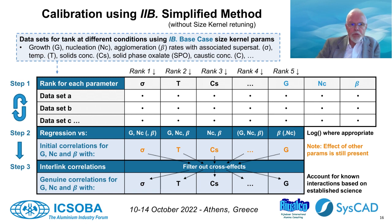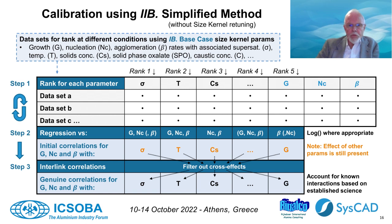The correlations that we obtain will be distorted to a certain extent, because the other process variables will not be constant over the ranked datasets. In order to eliminate this distortion, we interlink all the obtained correlations with all the ranked datasets. We do this for growth rate, nucleation rate and agglomeration rate separately. The process of autocorrection takes place in which the correlations converge to genuine correlations as a function of the respective process variables. It is advisable to use some common sense when doing the regressions and try to use established relationships for growth rate, nucleation rate and agglomeration rate.